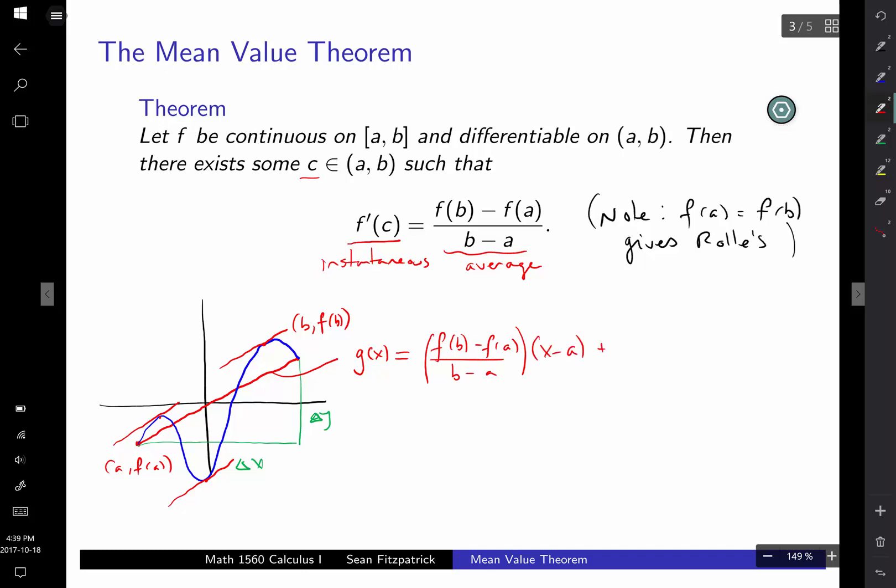So we actually work out what the equation of that line is, and we get something that looks like, well, so when x is equal to A, we should be at f(A). So there's g(x). Looks like that.